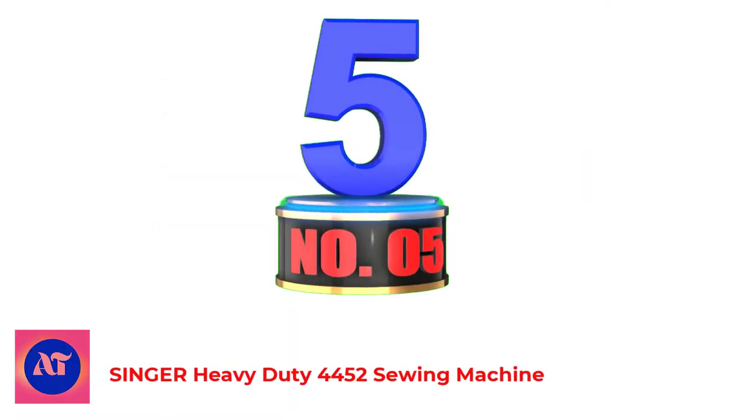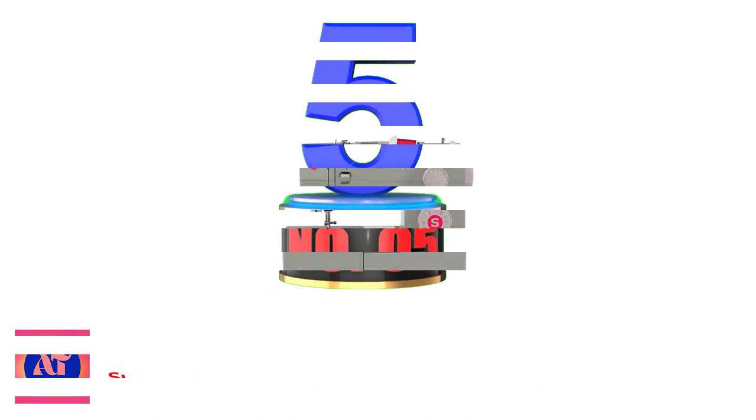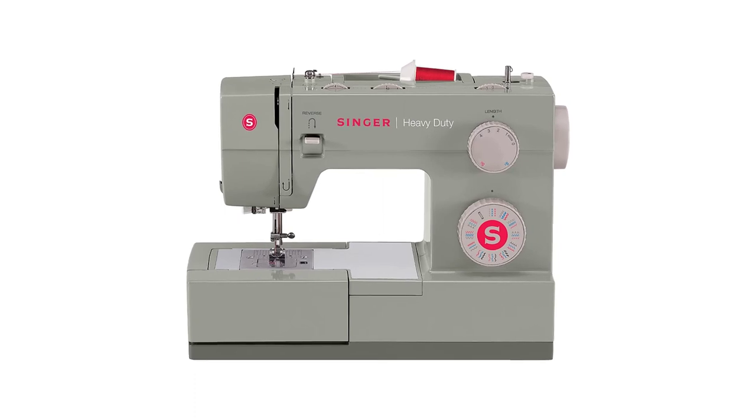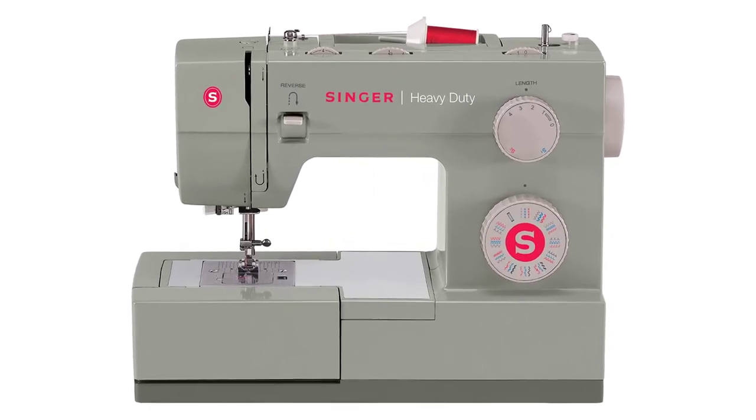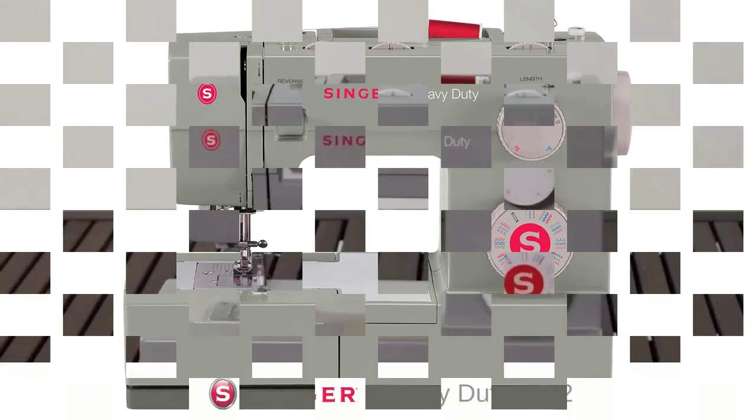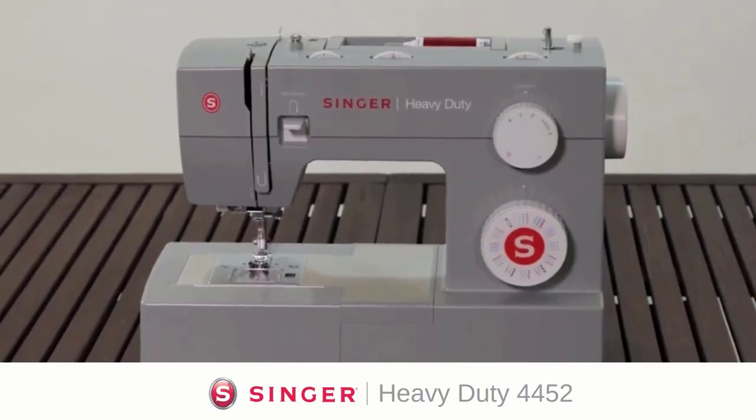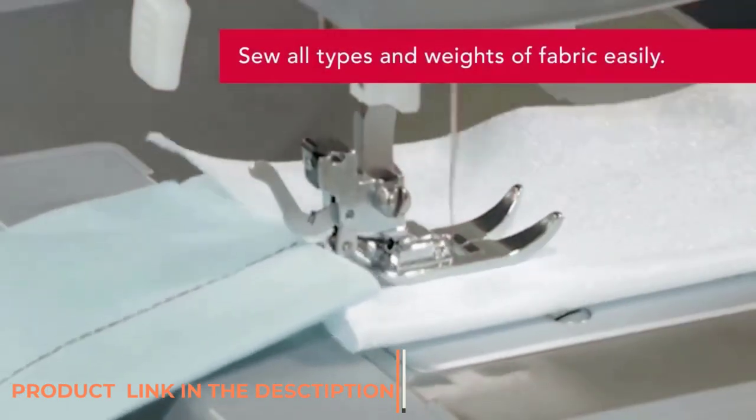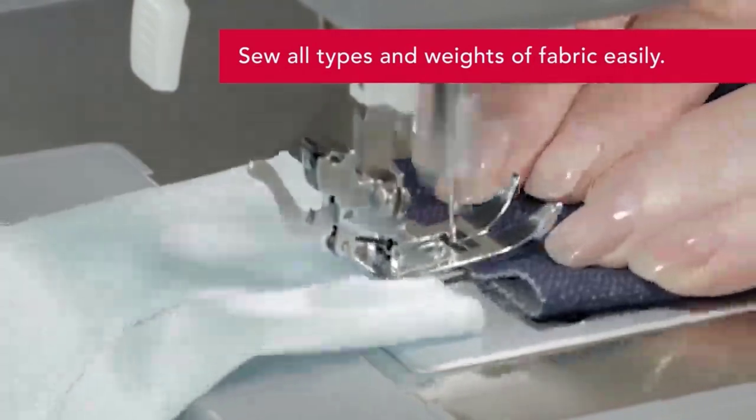Number 5: Singer Heavy Duty 4452 Sewing Machine. If going entirely manual isn't your type of thing and you prefer a more convenient shoe sewing experience, you can take a look at this sewing machine from Singer. Made out of heavy duty metal, you can rest assured about the durability of this unit. Unlike manual ones, there won't be much hassle work for its maintenance.